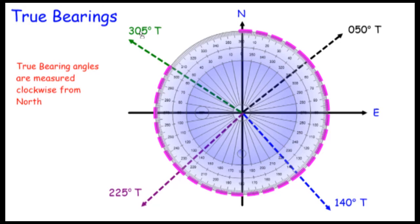So these angles are all measured in a clockwise direction from true north, which is compass north. Now let's go into GeoGebra and have a look at some problems.